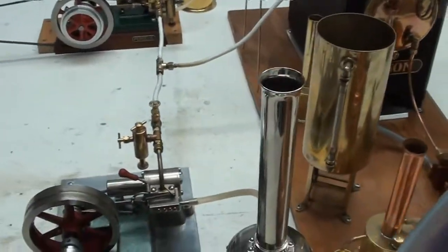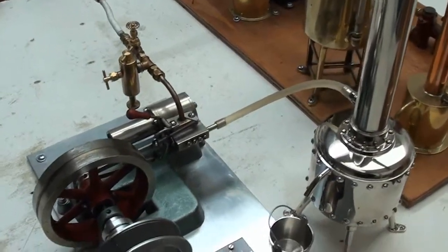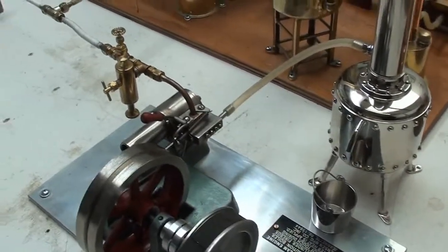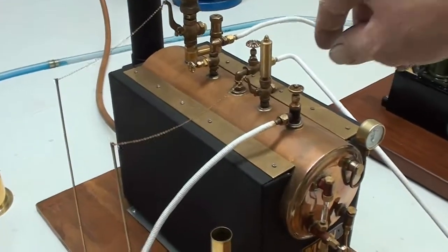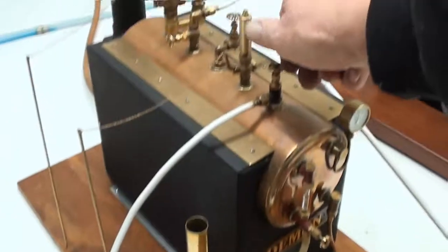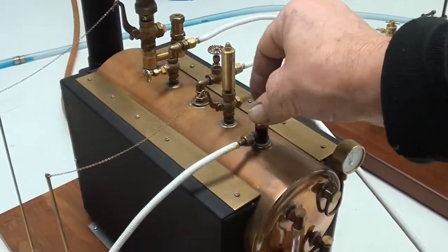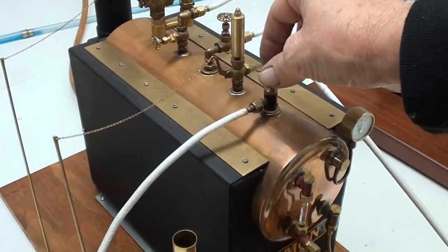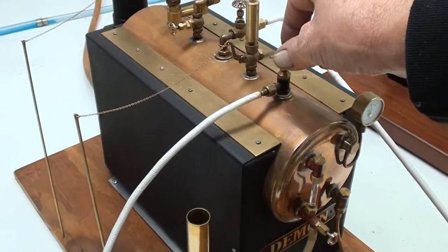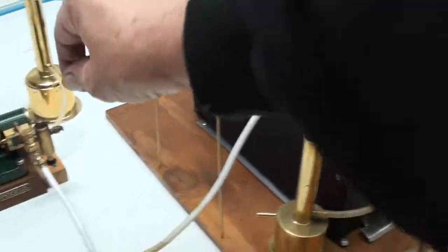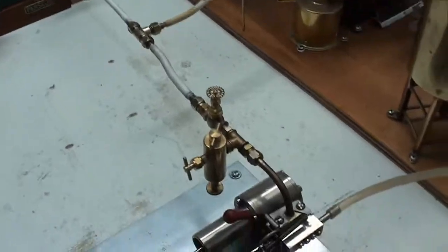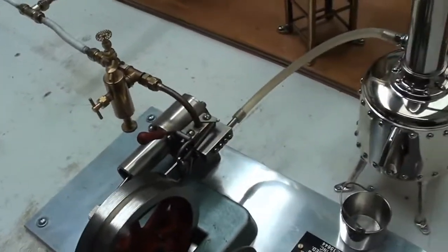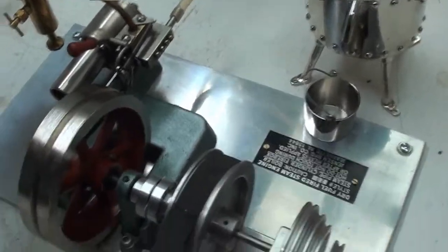I think I'll run the Jensen 20 test bed engine first, to see what she's got, in case you were wondering. Open the steam valve, it's hot, crack it right open. Perseus, I left it on. Rightio, here we go, let's see what this Jensen 20's got.